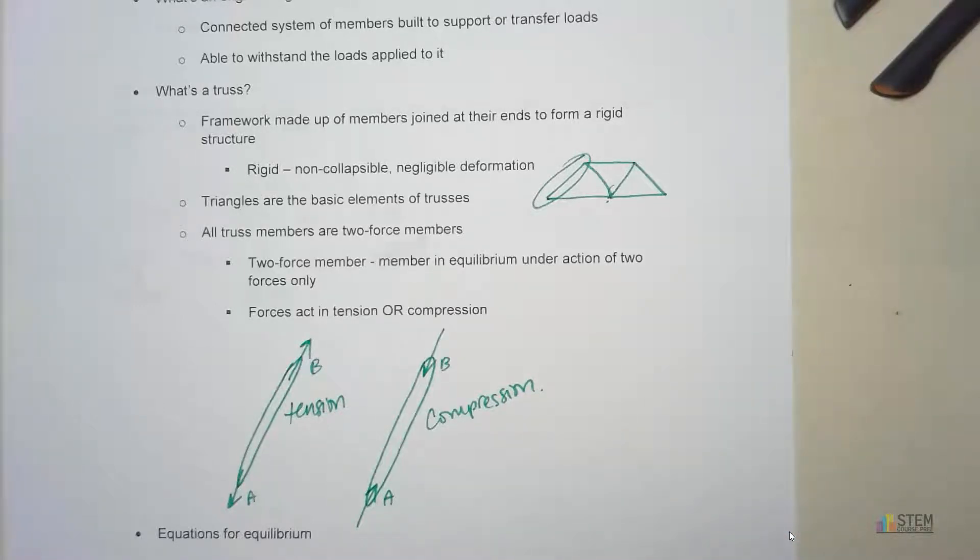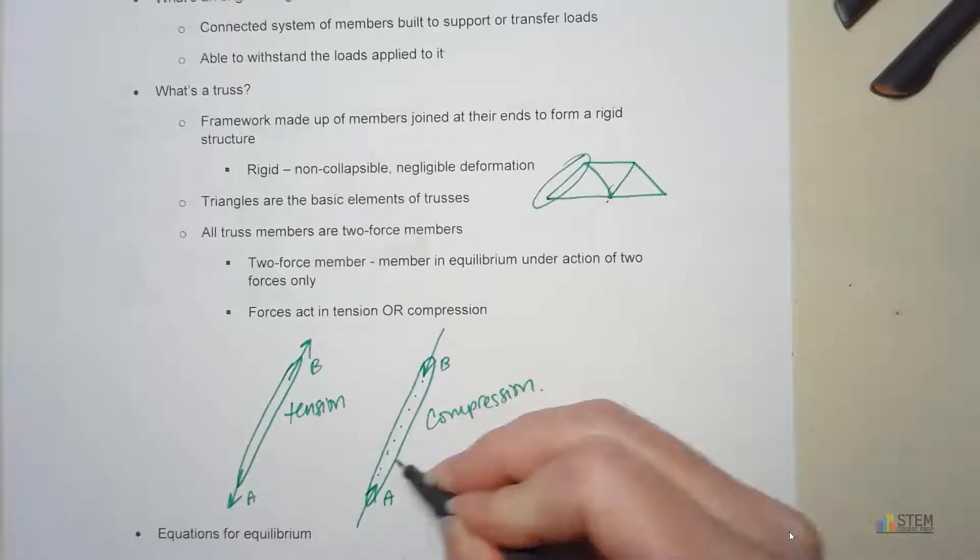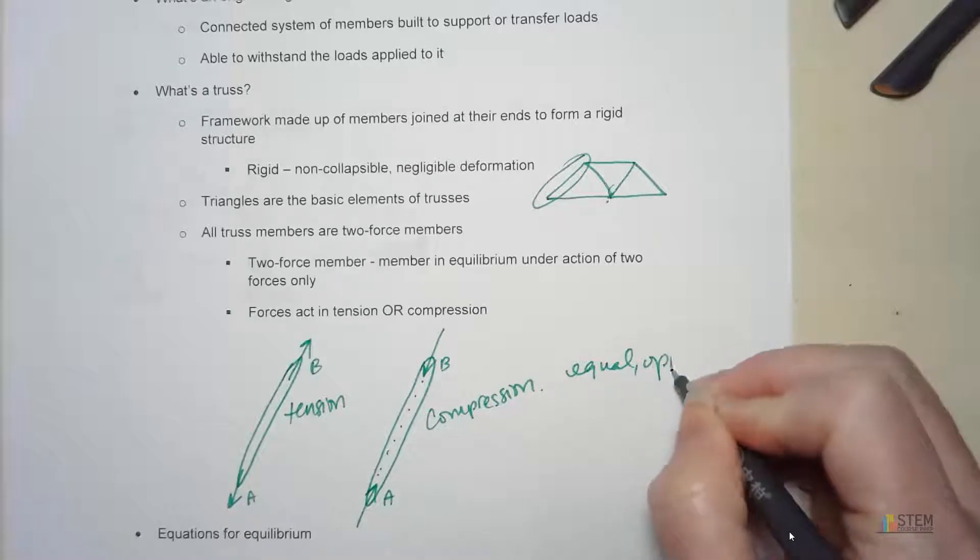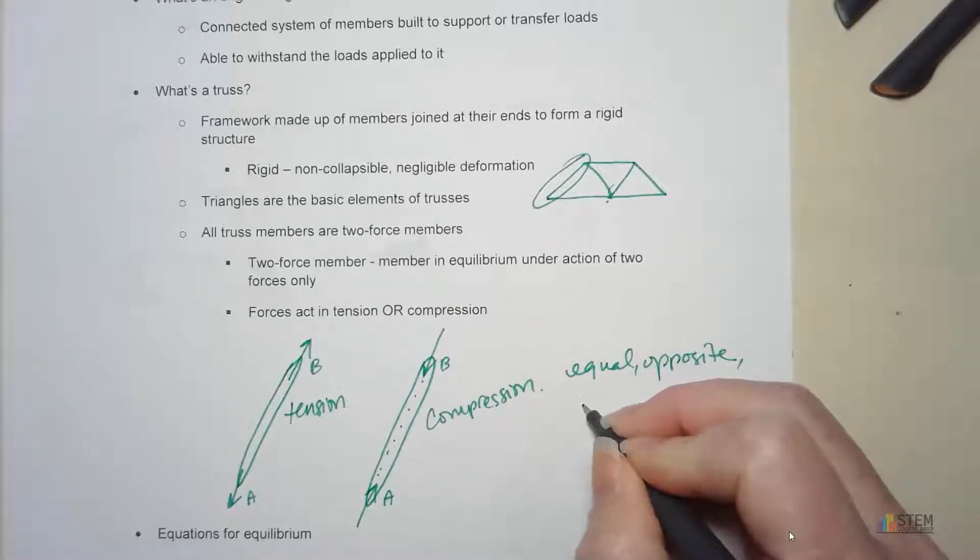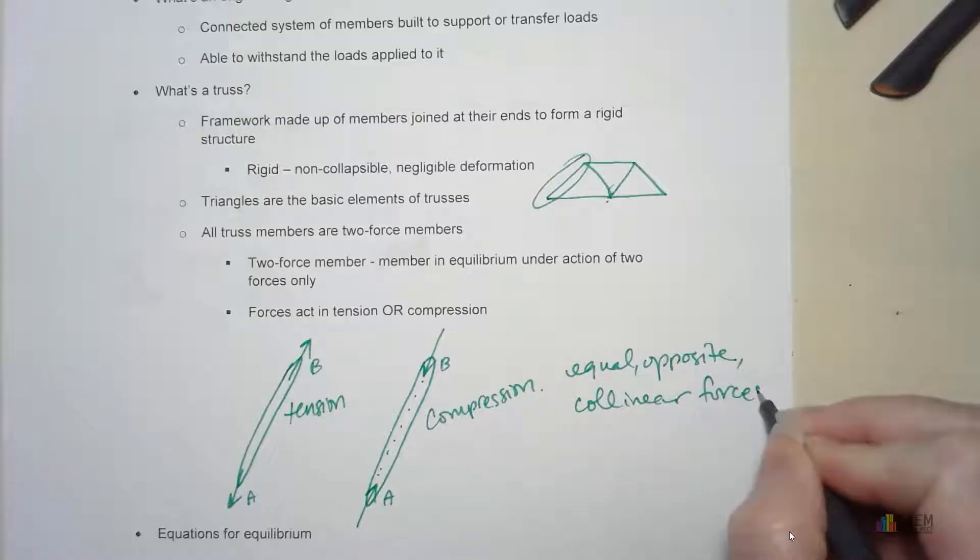So now I've got compression. Now, these forces that we've got, notice they're along the same line here. These are going to be equal magnitude. They're opposite in direction. And they are collinear. So they lie on the same line here. That's what we mean by two-force member.